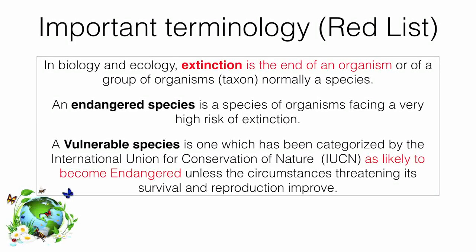Let's talk about some important terminology. First, extinction — extinction is the end of an organism or of a group of organisms, normally a species. When there is an end of one kind of species, they are said to be extinct. For example, dinosaurs are now extinct.